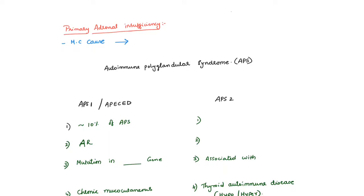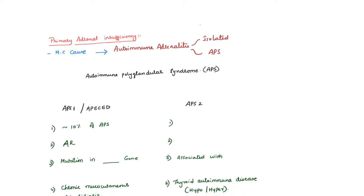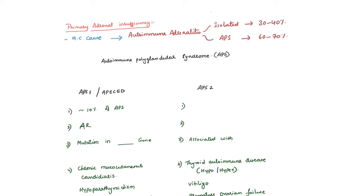Coming to the primary adrenal insufficiency causes, the most common cause is autoimmune adrenalitis. This autoimmune adrenalitis can be isolated or occur in association with autoimmune polyglandular syndrome. In isolated form, it occurs in about 30 to 40% of patients, and in the form of autoimmune polyglandular syndrome, it accounts for 60 to 70% of cases of autoimmune adrenalitis.